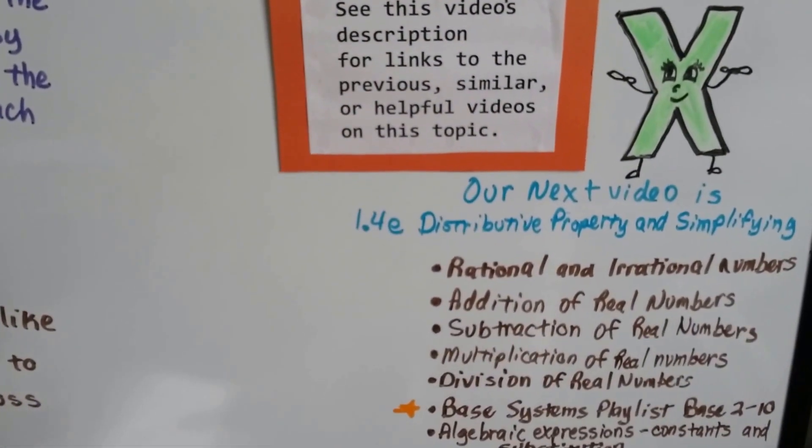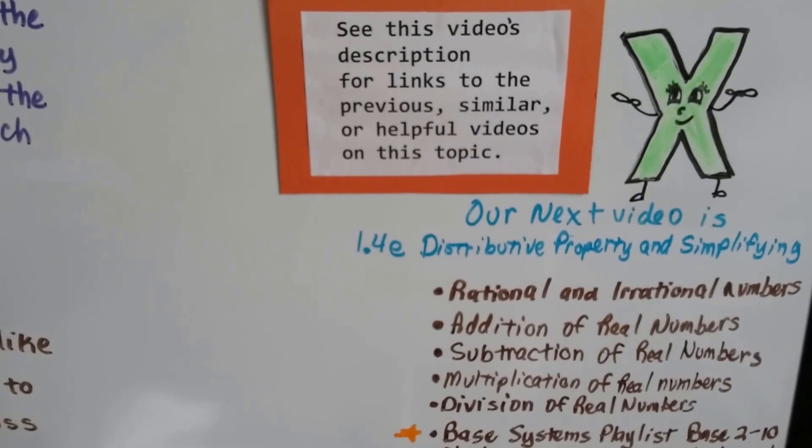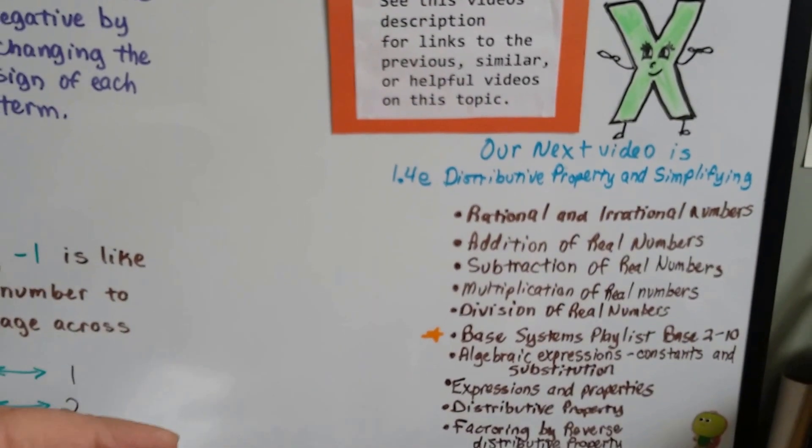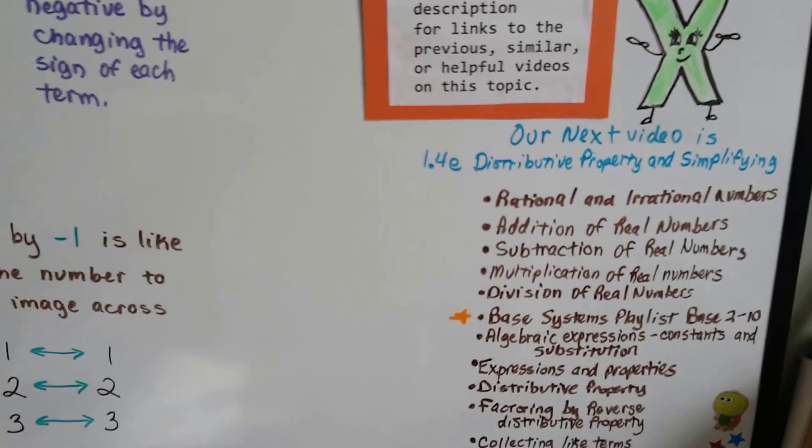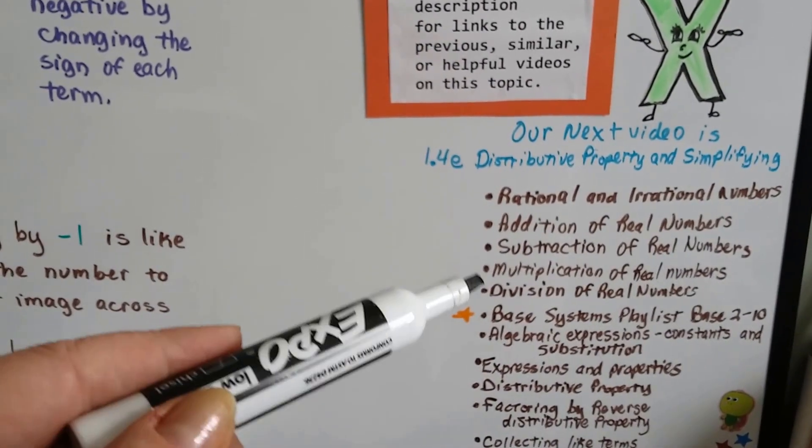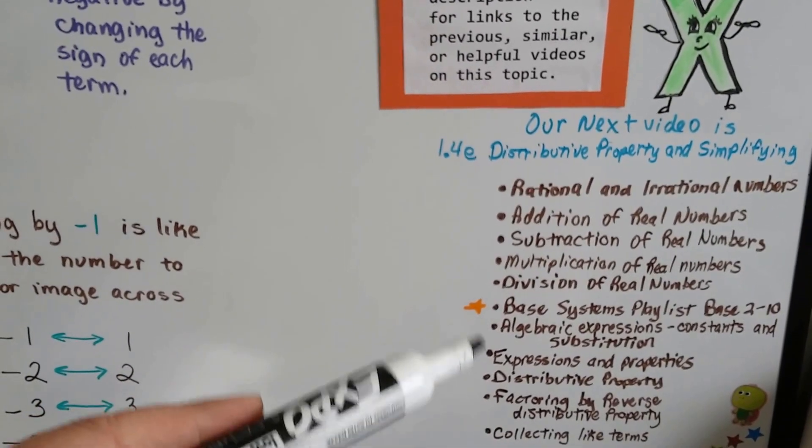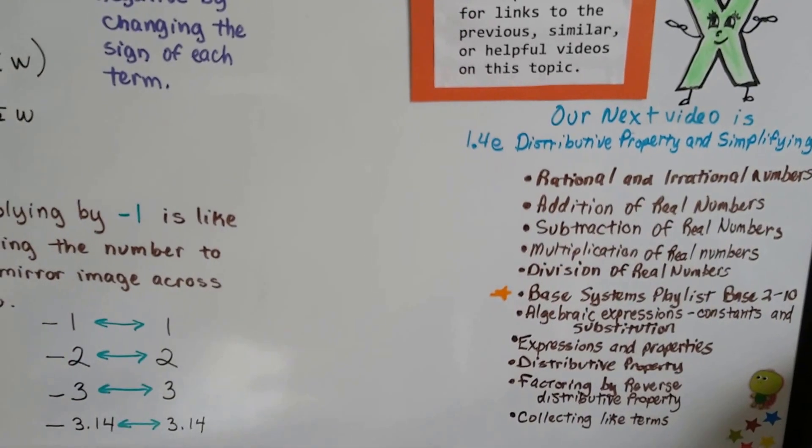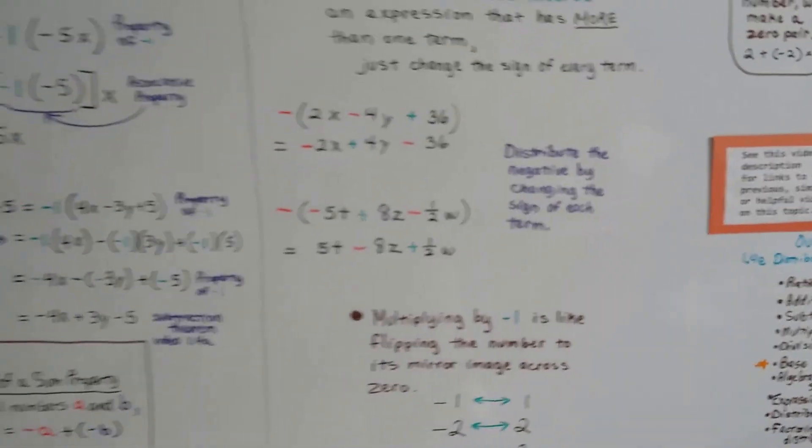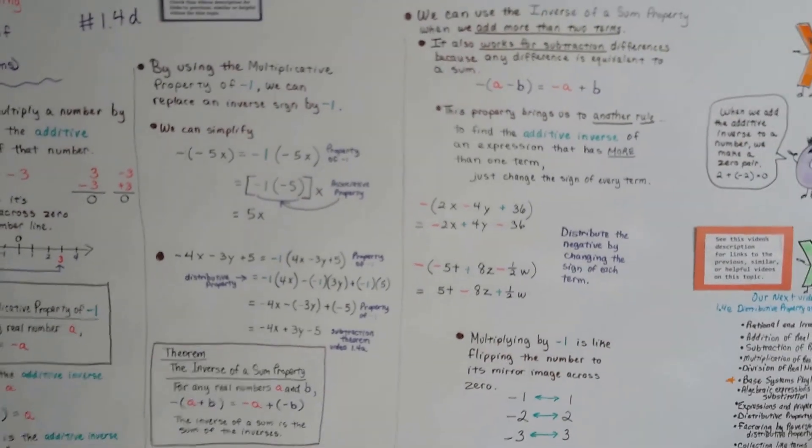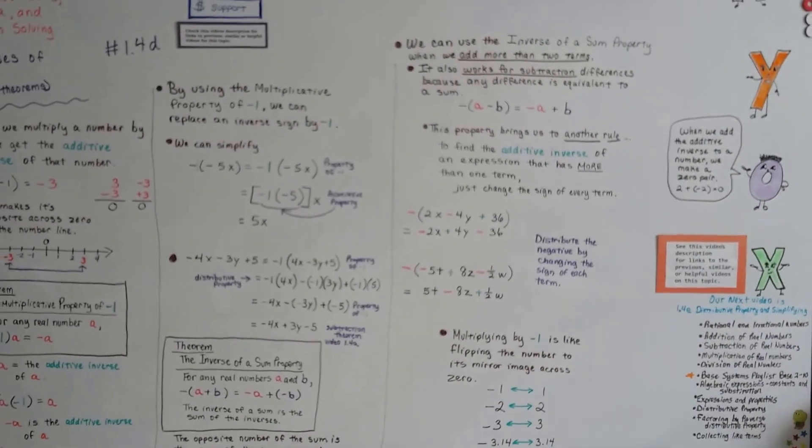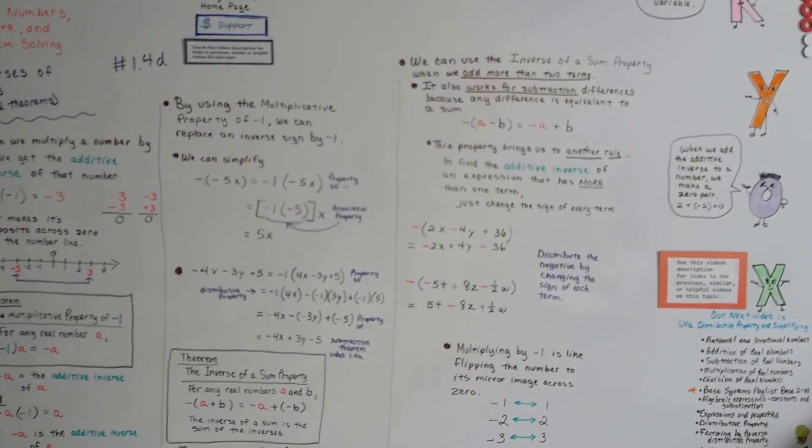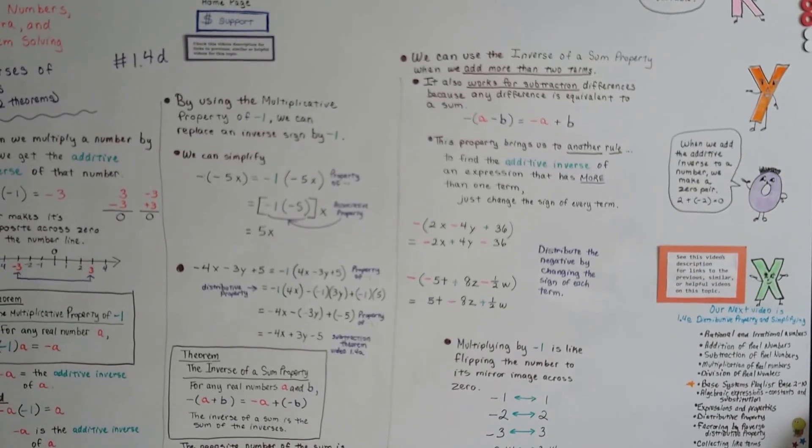So our next video is 1.4e. There's a lot of lessons in this lesson 4, and we're going to talk about the distributive property and simplifying. And if you want to go to any of the previous videos in chapter 1 that we've done so far, just look at this description. You can click right on the links. We talked all about division of real numbers and subtraction and multiplication and addition. We even talked a little bit about base systems and binary. And if you want to see anything about expressions and the properties or any of the previous theorems, collecting like terms, it's all in the description. You can just click on them real quick. Give yourself a nice little review. Keep up with what we're doing. Don't get lost. Because each of my videos builds upon the previous one. I give a lesson and then the next lesson incorporates the one before it. Climbing some stairs to finish Algebra 2. I hope you're doing okay and I'll see you next video. Bye!